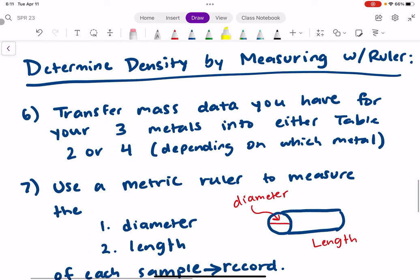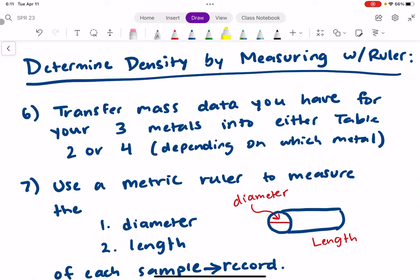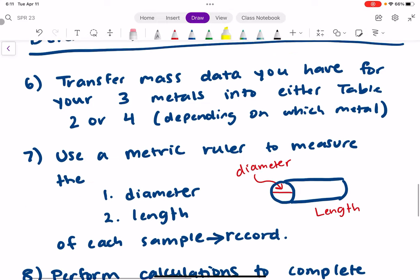In this method, you're determining the density by measuring with a metric ruler. For step six, you're going to transfer the mass data that you have for your three metals. The mass shouldn't have changed. And you're going to put that into either table two or four, depending on which metal you have.